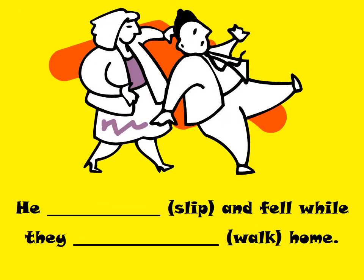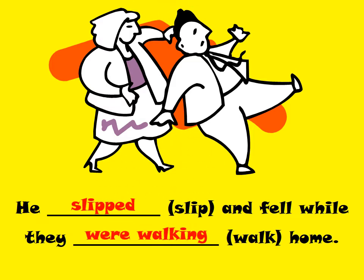He slipped and fell while they were walking home. So what is the interrupted action? For example, you were walking and then you slipped down and fell — that is the interrupted action. So he slipped and fell while they were walking home.